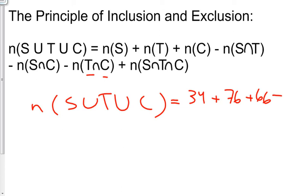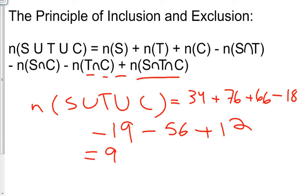the intersection of S and T, so minus 18, minus the intersection of S and C, minus 19, oh maybe I got those backwards, that's okay, minus the intersection of T and C, which was 56%, plus the intersection of all three. Well we had 12 that intersected all three. If we calculate that we get 95% of all students used one of those three ways to communicate.